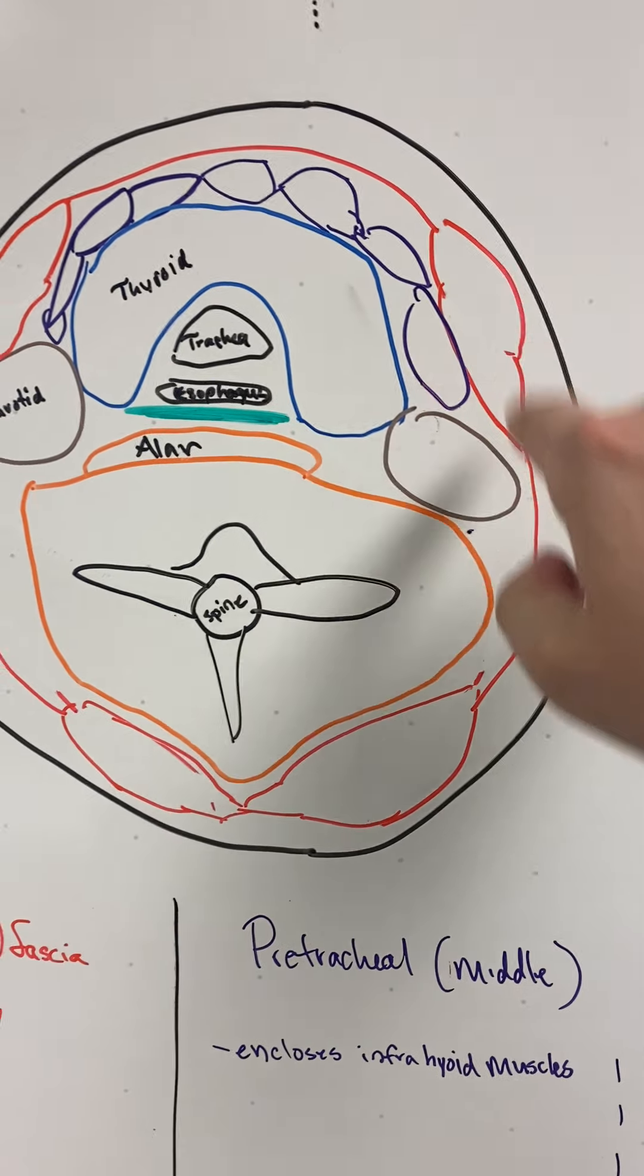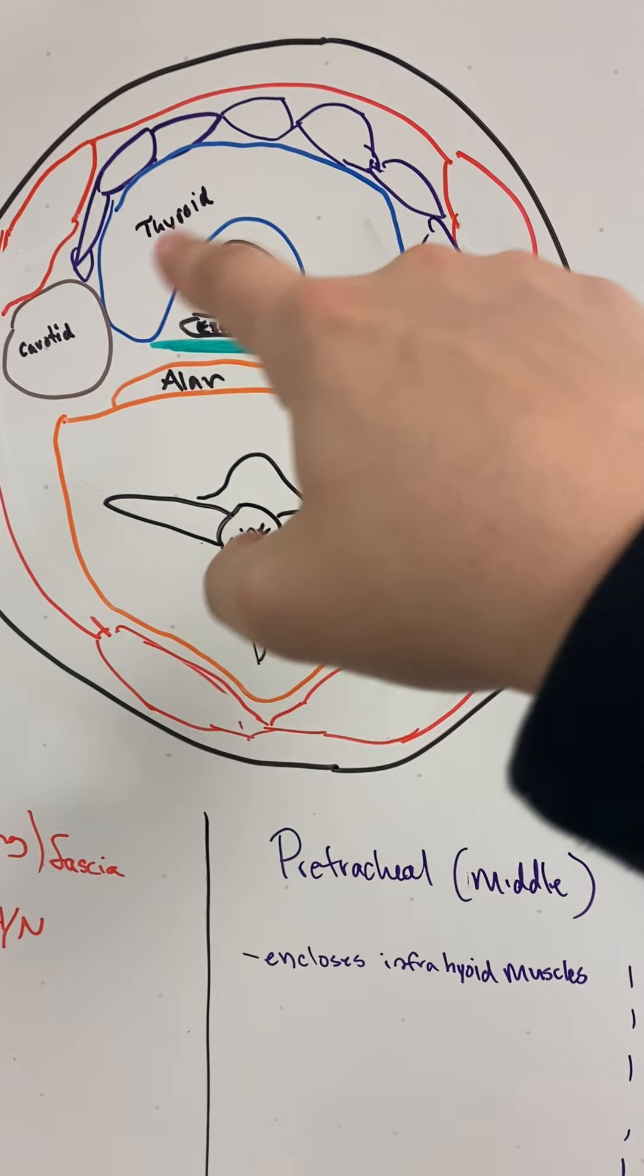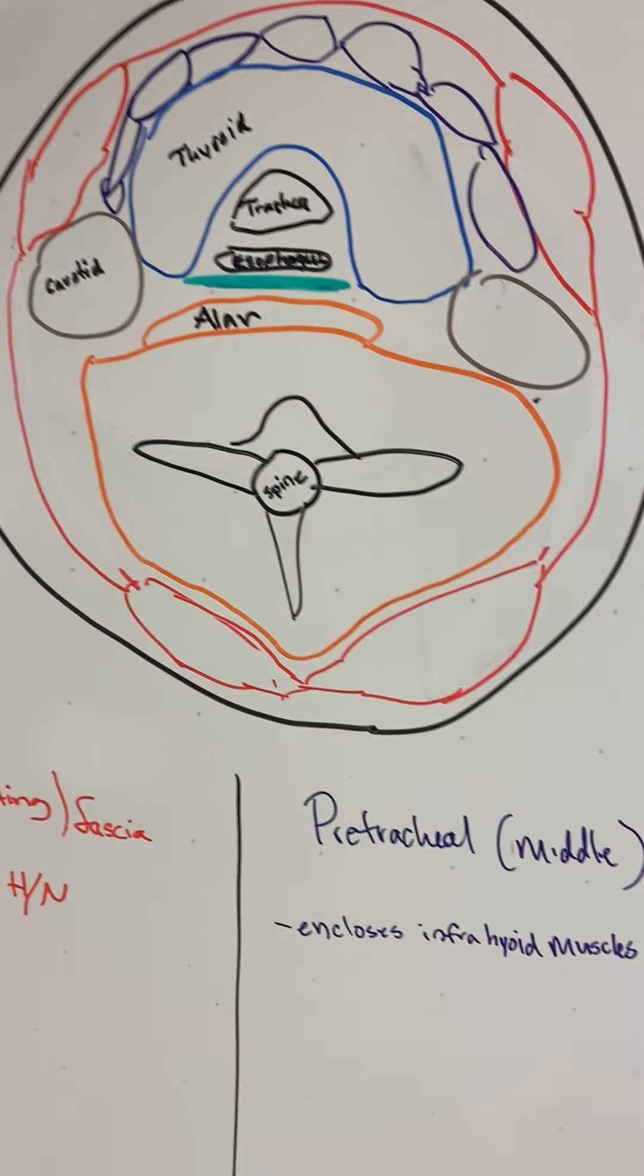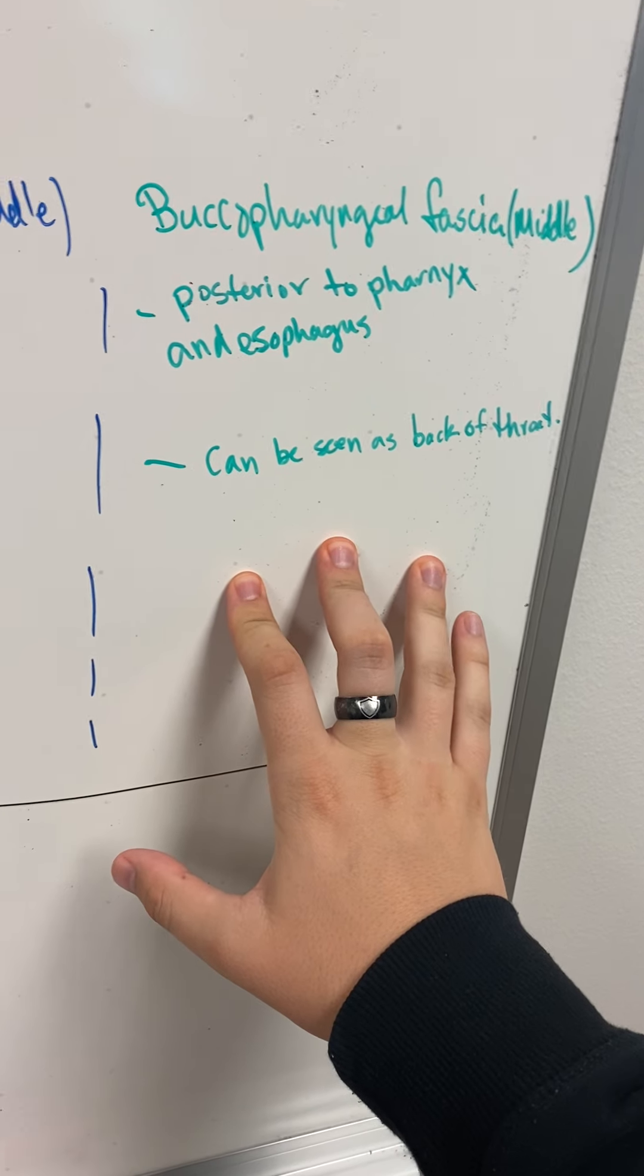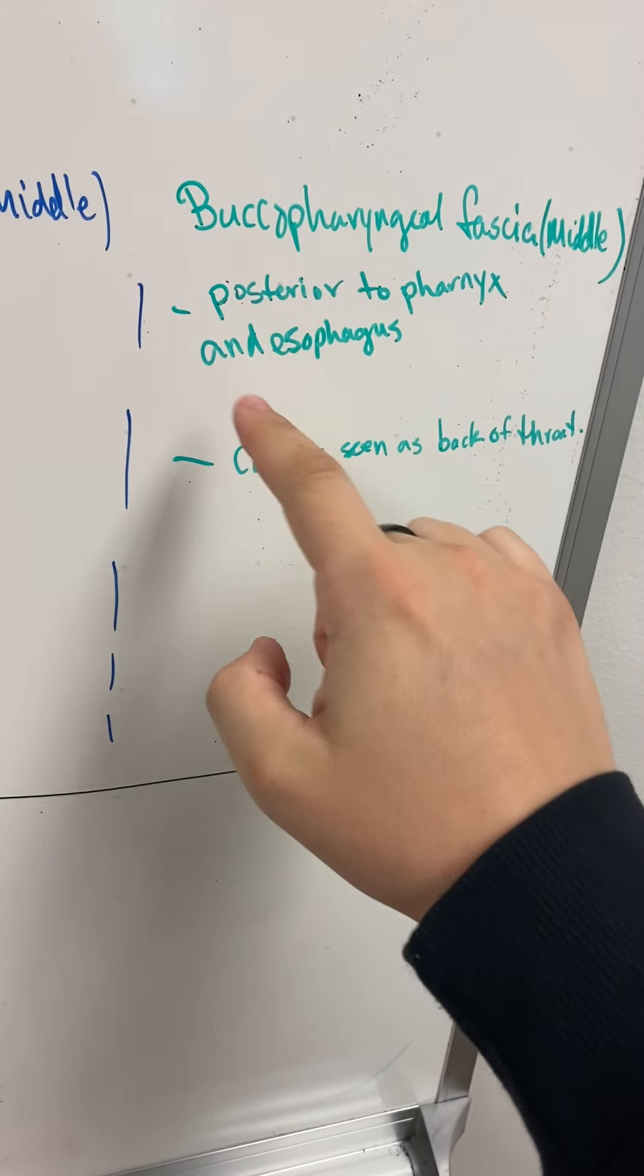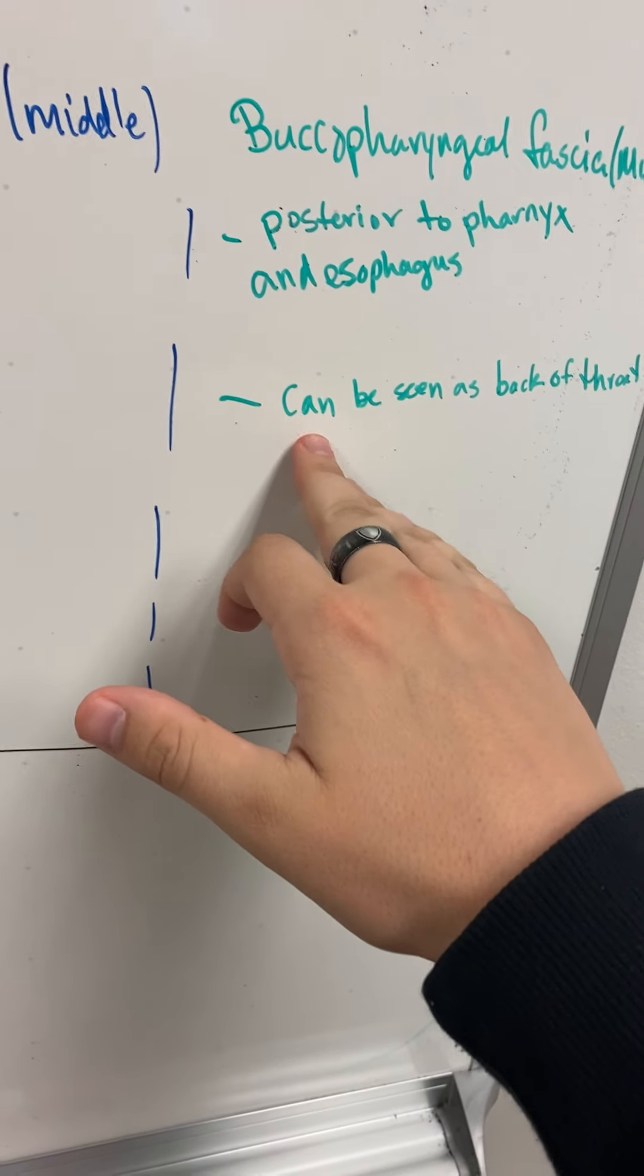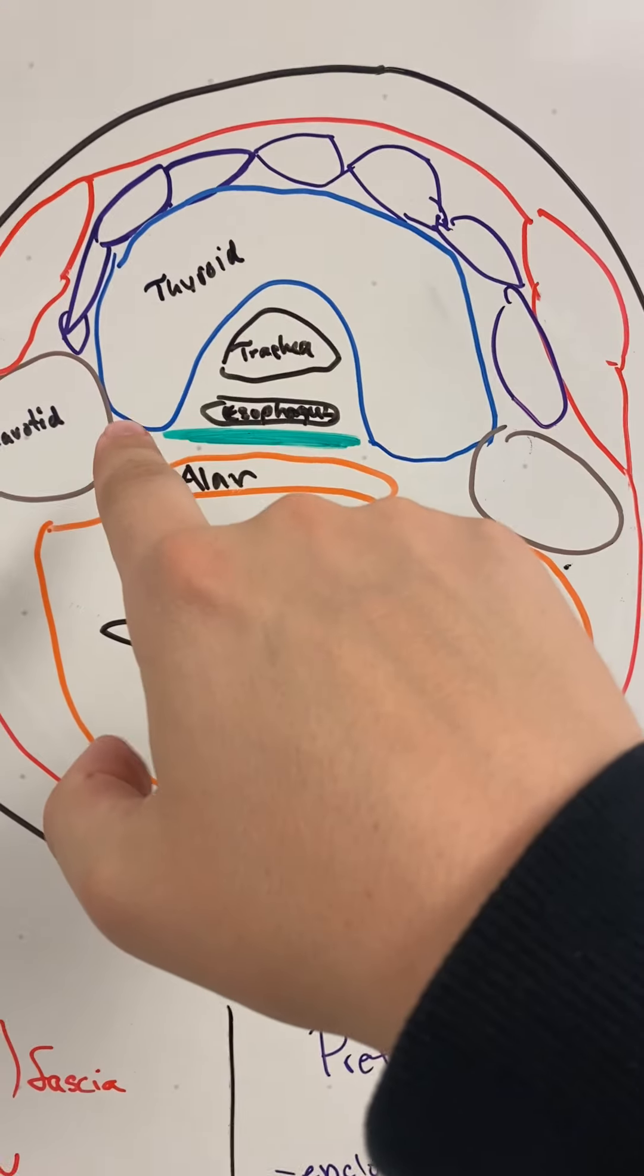So we've gone over the red guy, these openings are those muscles. We have the thyroid, we have that purple one, the pre-tracheal, then we have the visceral tracheal, which is what we talked about. So this is the one that is clinically relevant to us. Buccopharyngeal is still part of that middle layer and it's posterior, so it's behind the pharynx and the esophagus. It's just the back of the throat pretty much when you see it, and we can see it, so it's right here.